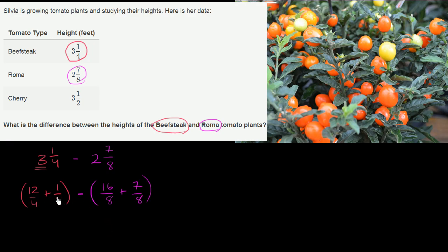Now, what is 12/4 plus 1/4? It's 13/4. 13 over 4. And then what's 16/8 plus 7/8? Well, that's 23 over 8. So this is going to be minus 23 over 8.